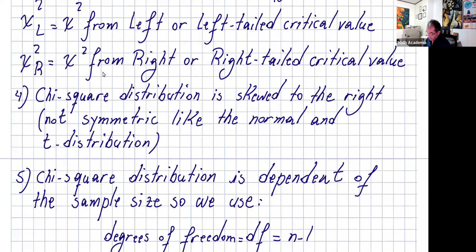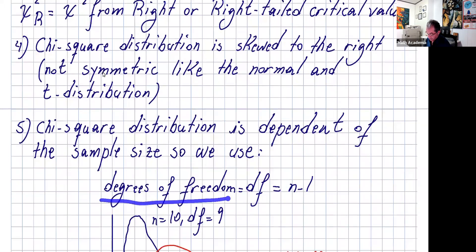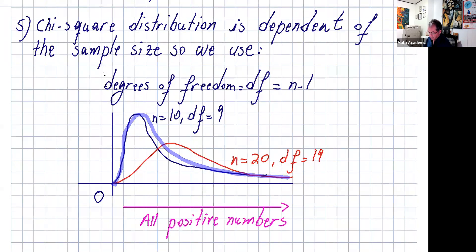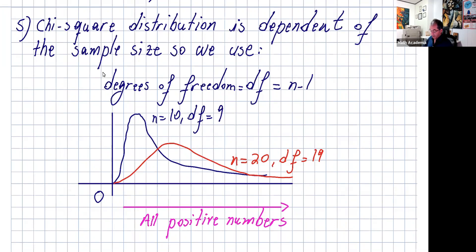Number five: chi-squared distribution is dependent on the sample size, so we use degrees of freedom like the T distribution — df, which is n minus one. Different sample sizes or degrees of freedom have different shapes; the one with a smaller sample size is more steep. Also very important: chi-squared distribution starts from zero and all the numbers are positive. You do not have negative numbers for chi-squared critical values — they're all positive.